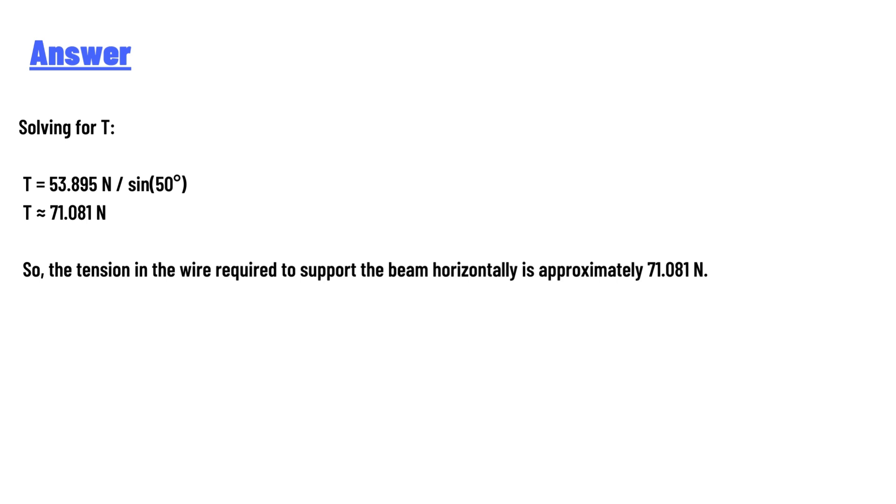T ≈ 71.081 N. So the tension in the wire required to support the beam horizontally is approximately 71.081 N.